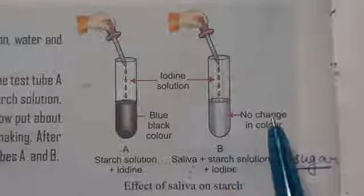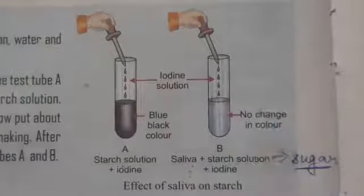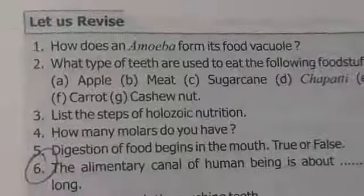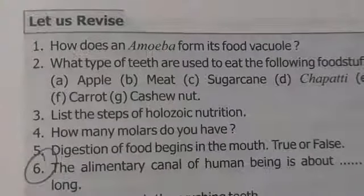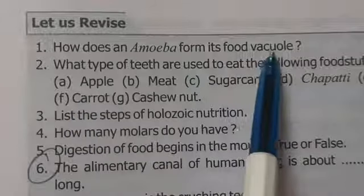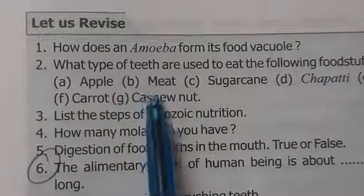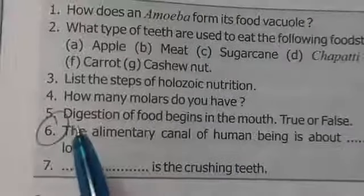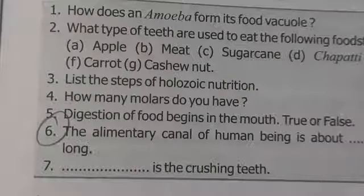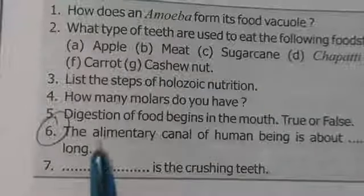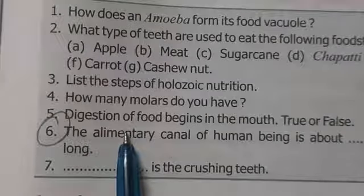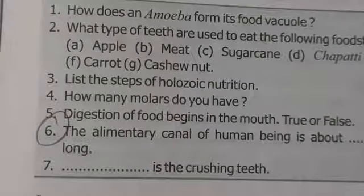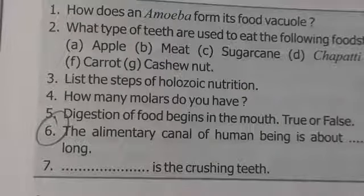I hope children that this much is clear to all of you. These questions — how does an amoeba form its food vacuole, the types of teeth — all the answers of these questions are given in the book, so you will do these on your own. Goodbye, children.